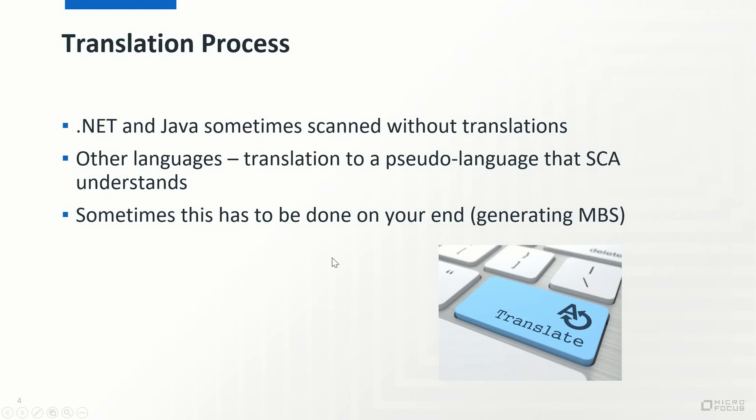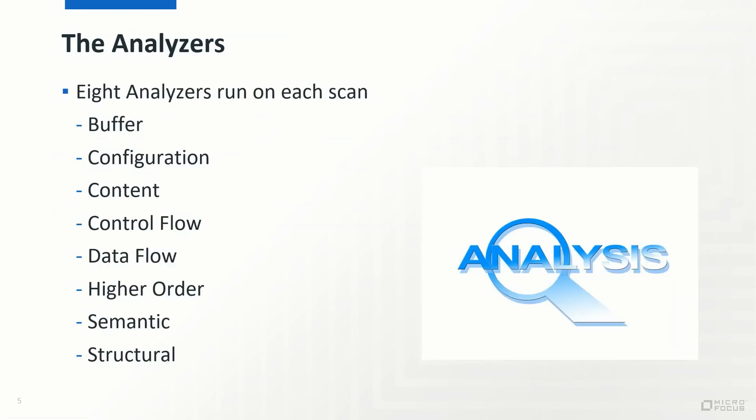So SCA, once you've translated and submitted your code, is going to run potentially eight analyzers on each scan. It won't necessarily run all eight on every scan. So for example, the configuration analyzer runs specifically on config files. So if you don't submit any config files, it's not going to run. The content analyzer is HTML specific, and that includes dynamic HTML. So something like PHP would be scanned by the content analyzer as well. But the important takeaway there is you don't need to pick which analyzers run. Every analyzer that's necessary for your payload will run automatically.